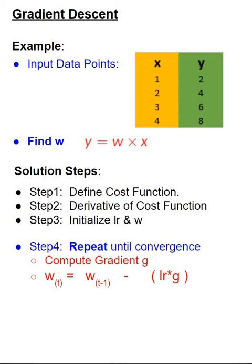So now let's explore the formula: w at time t is written as w at time t minus 1 minus the learning rate times the gradient. Here, g is the gradient which we have calculated in step 2, and LR is the step size which we have initialized in step 3.